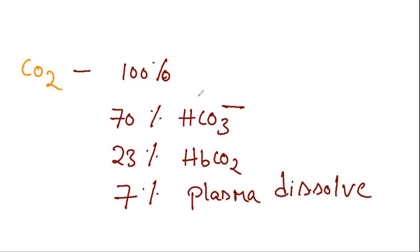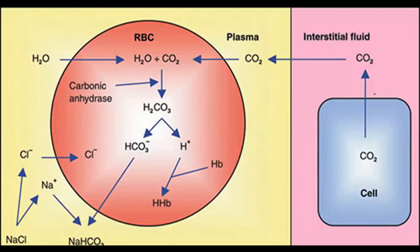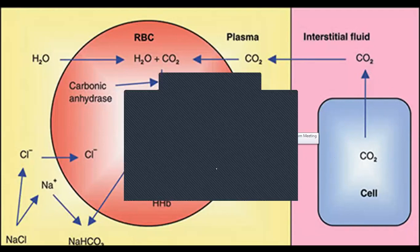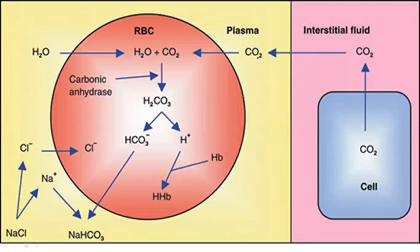The Chloride Shift is linked to the transport of carbon dioxide. Carbon dioxide is produced by cells through oxidation and oxidative phosphorylation as a byproduct. This CO2 passes into the interstitial fluid, then into the plasma, and from the plasma it enters the RBC where it combines with water.